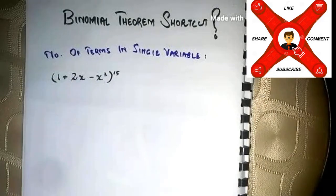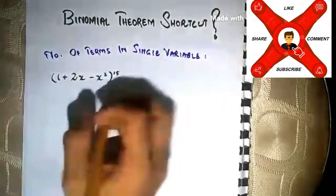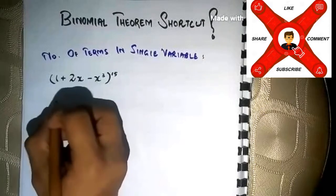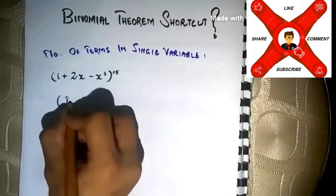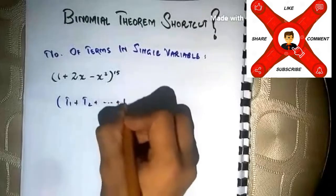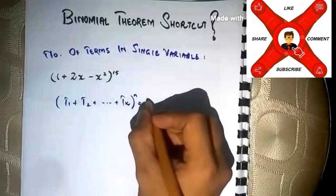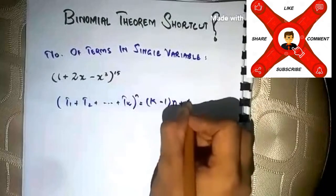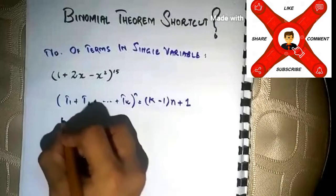Today, we are going to discuss the shortcut method to find the number of terms in the binomial theorem for a single variable and for multiple variables. First, we take an example of a single variable — an expression which has only one variable. For this kind of expansion, we have a simple formula to find the number of terms: (k minus 1) into (n plus 1), where n is the power of the expansion and k is the number of terms.